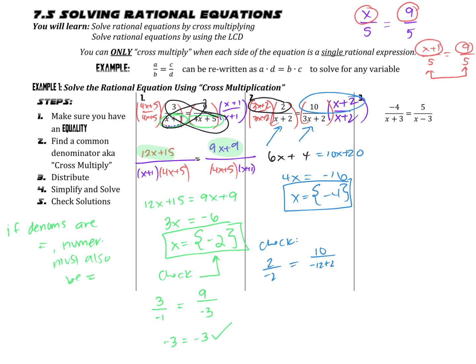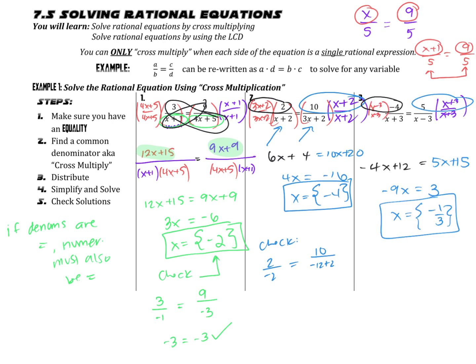I'm going to encourage you to pause the video and work through number 3 on your own. Check to make sure your solution is not extraneous, then unpause and see how you did. After you cross-multiply or do the common denominator step, you get negative 4x+12 equals 5x+15. Combining like terms: negative 9x equals 3, giving x equals negative 1/3. Negative 1/3 is not extraneous, and we could plug it back in to verify.